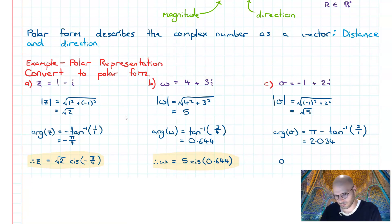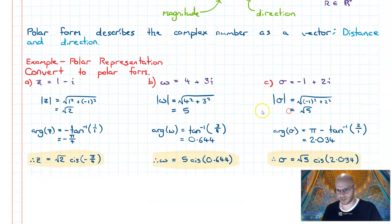So therefore the polar representation is going to look like root five cis 2.034. Done.